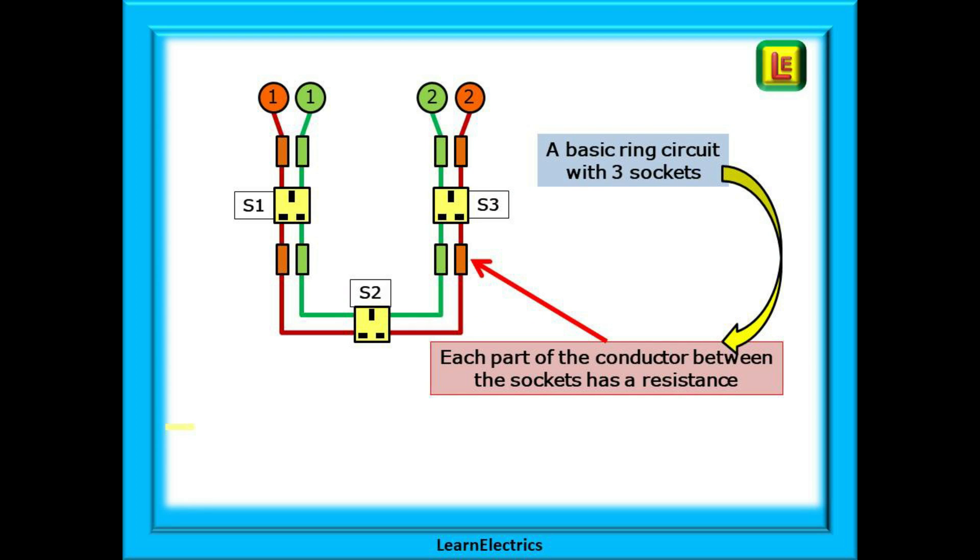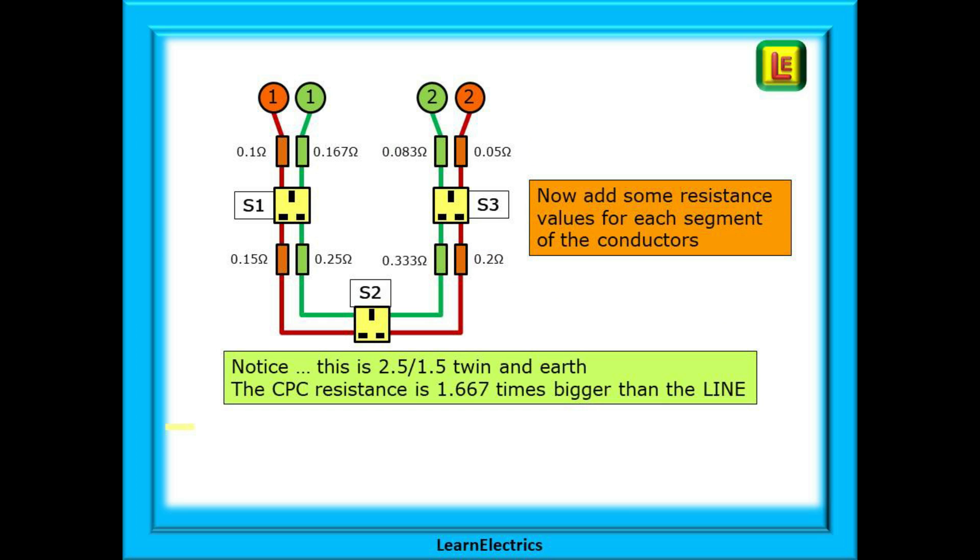Looking at our basic ring circuit it is made up of several lengths of twin and earth cable and each of the copper conductors will have a certain resistance depending on the length of that section of the circuit. We've shown the conductor resistances here as resistors as a reminder that even copper wire has a resistance value. Let's put in some resistance numbers. The longer the length of the cable the greater the resistance. As we are assuming that this is 2.5 1.5 twin and earth, the smaller sized earth conductor will have a bigger resistance than the larger line conductor by a factor of 1.667. You'll see how this works as we go along.